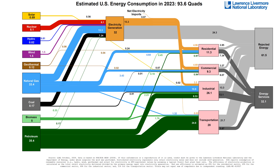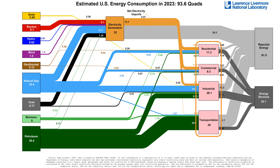Let's walk through an example. On the left-hand side of the diagram, you can see those same primary energy sources we showed in the pie charts at the beginning of this episode. On the right-hand side, you can see four end-use sectors: buildings, split into residential and commercial, industry, and transportation.